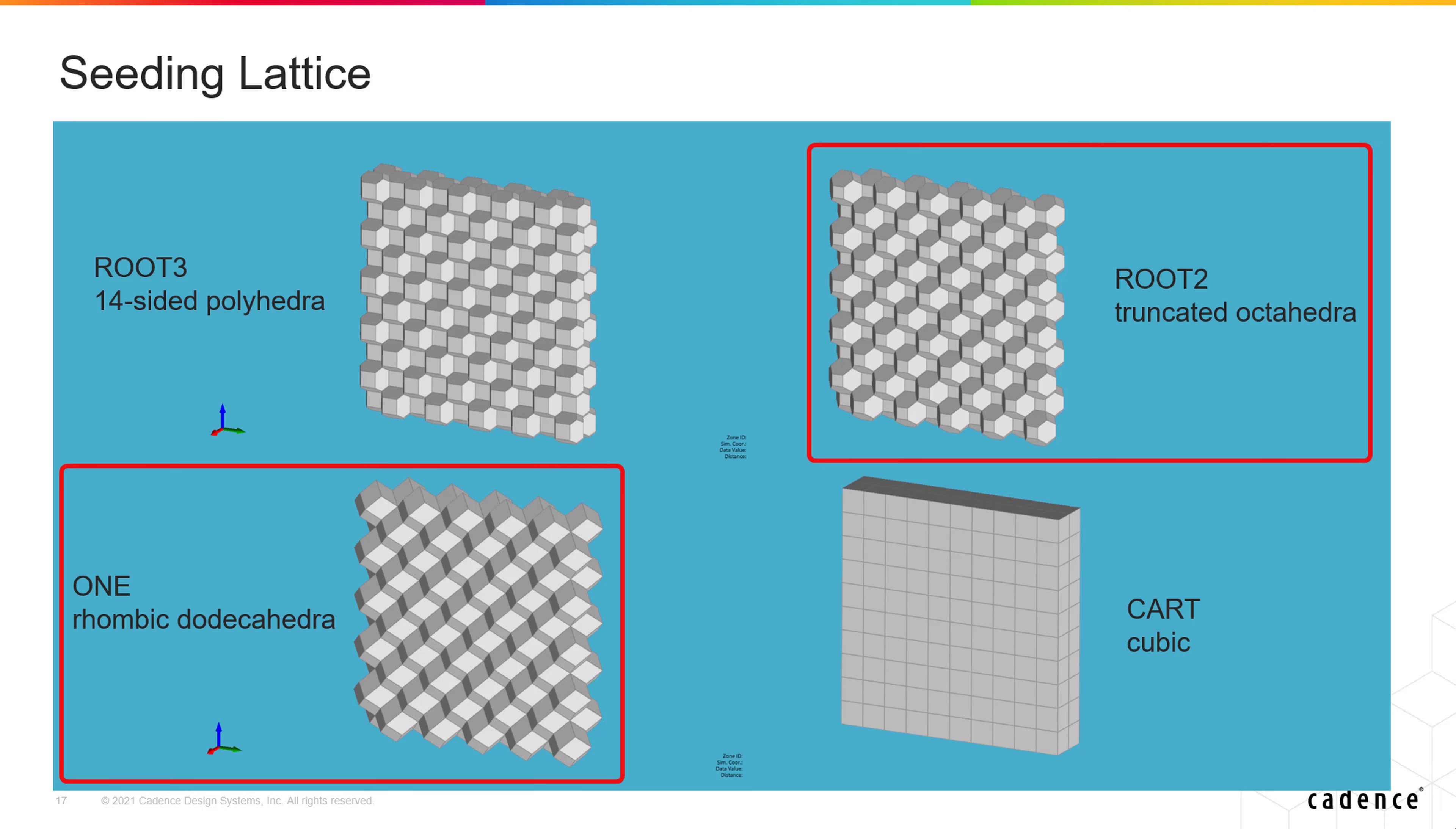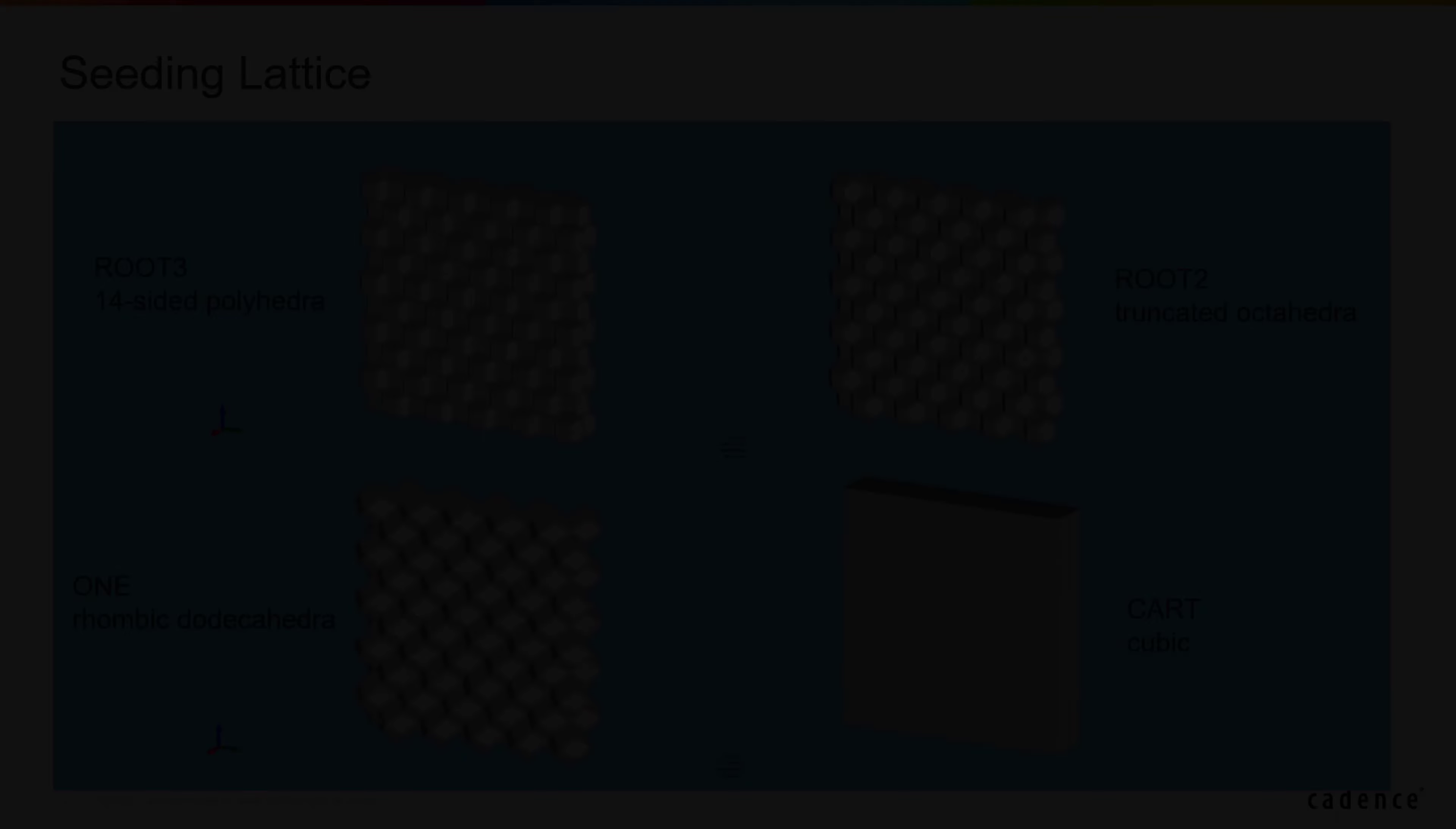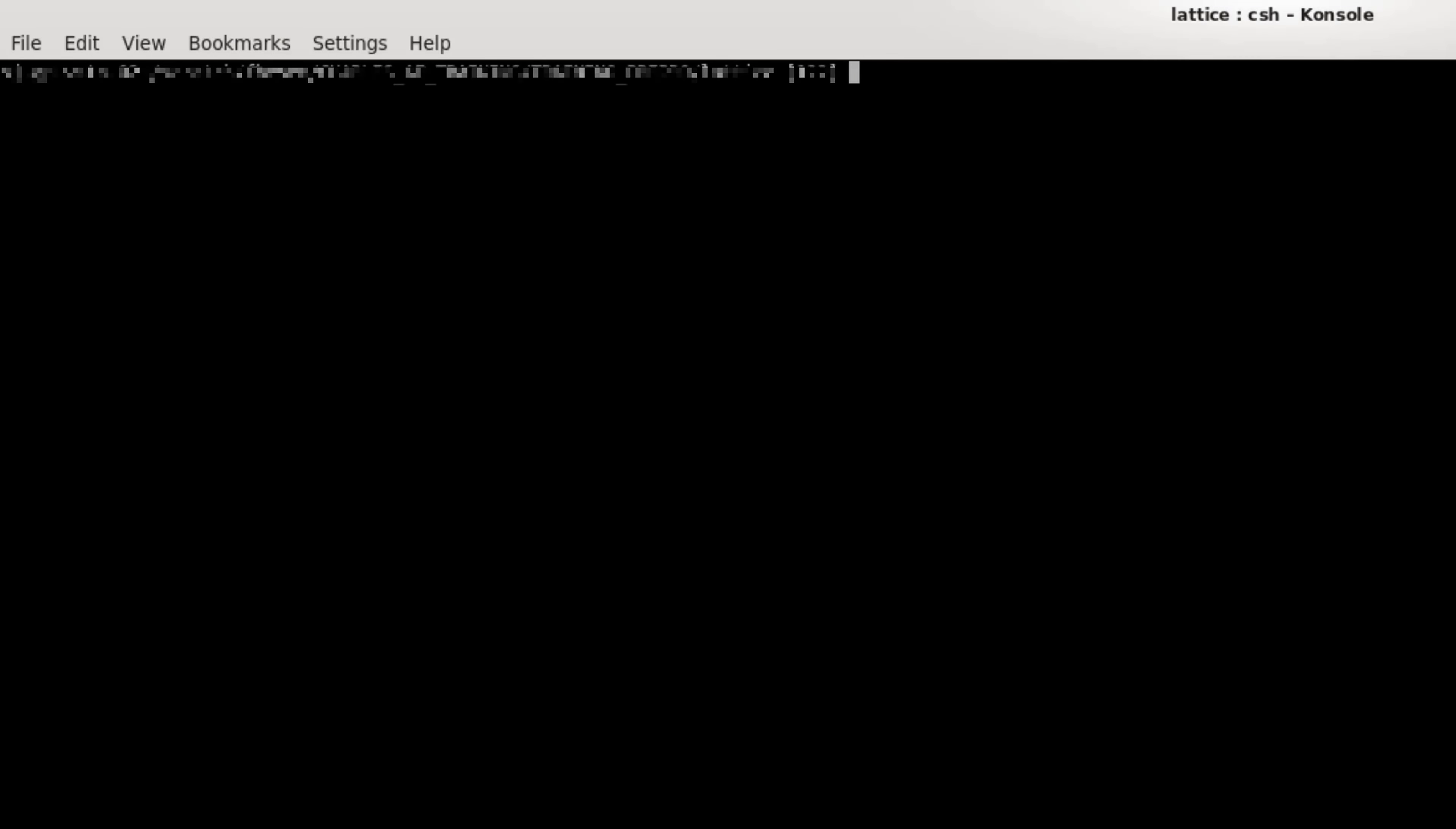The root 1 and root 2 lattice types have been implemented more recently and should be used with caution, as they haven't been heavily tested. Now, let's see how to apply the different lattice types on a simple geometry.